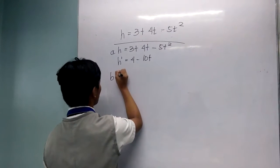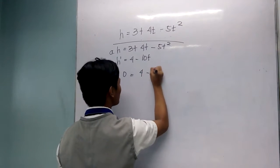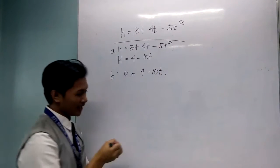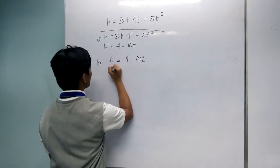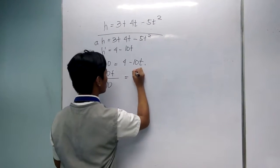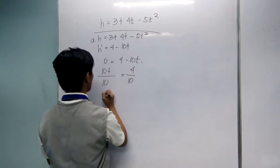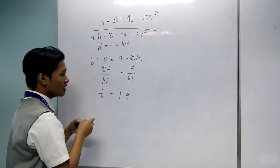The second step is, 0 equals 4 minus 10t. So 10t over 10 equals 4 over 10. So t is equivalent to 0.4.